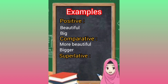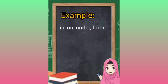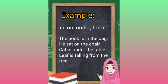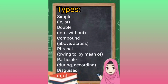Superlative: most beautiful, biggest. A preposition is a word that describes position and relationship between two parts of a sentence. Examples: in, on, under, from. The book is in the bag. He sat on the chair. The cat is under the table. The leaf is falling from the tree.